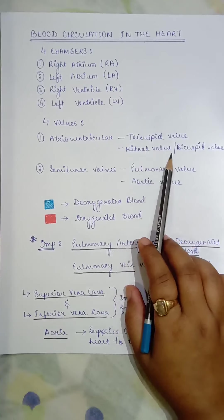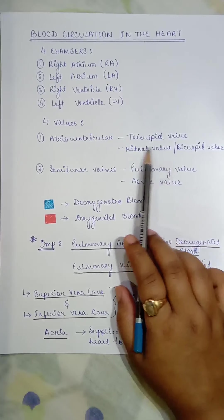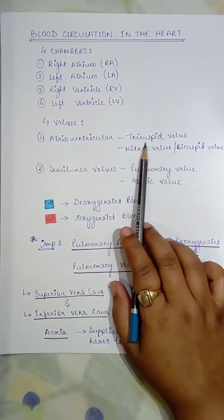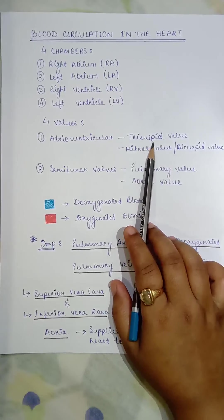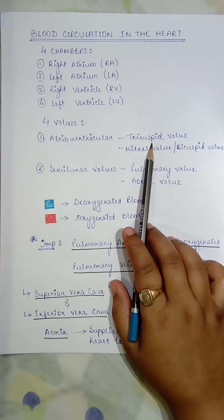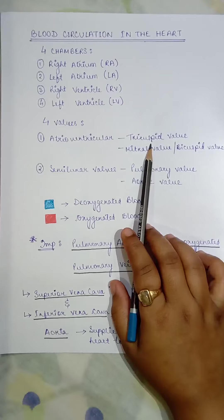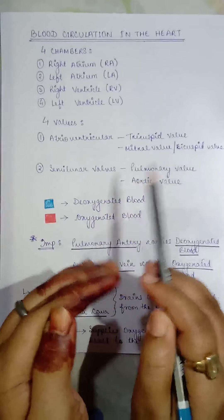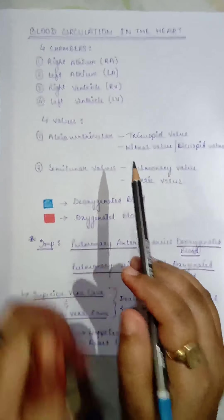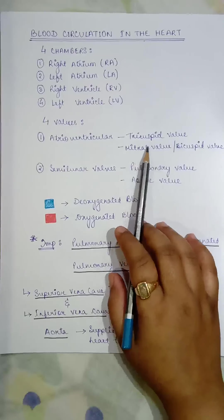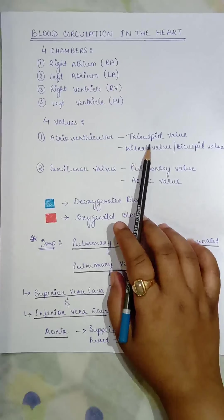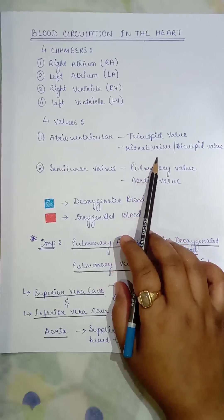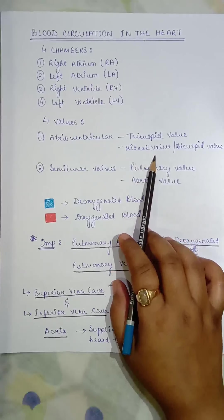The name tricuspid means the valve has three cusps — three segments that open and close. So there are three cusps in the tricuspid valve. In the bicuspid valve there are two cusps.